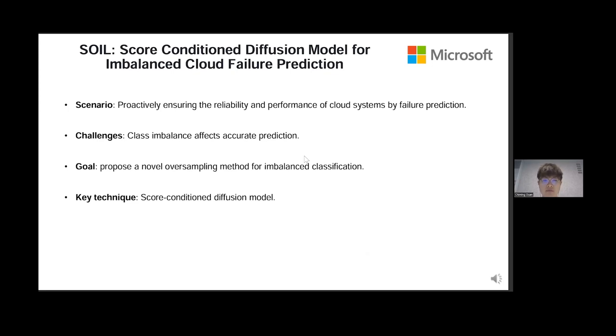To overcome these limitations, we propose a novel oversampling method for imbalanced classification called SOIL. SOIL utilizes a Score Conditional Diffusion Model to generate high-quality samples for the minority class, more accurately reflecting real-world cloud failure patterns.